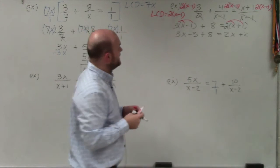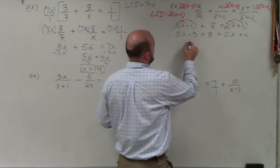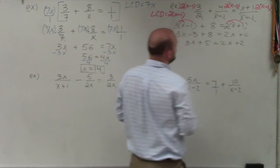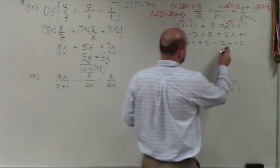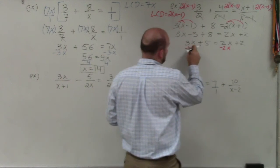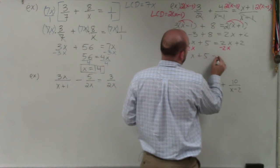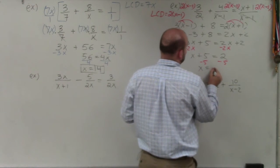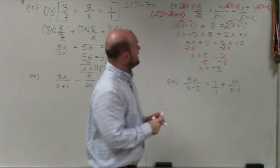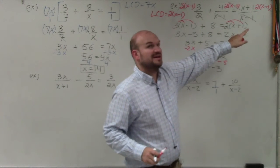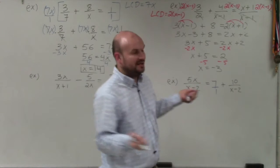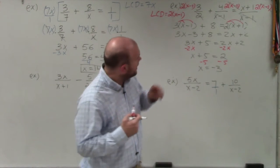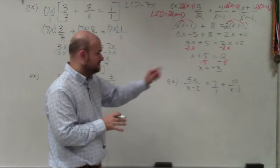I need to simplify and combine like terms: 3x plus 5 equals 2x plus 2. Get the variables to the same side by subtracting 2x on both sides to get x plus 5 equals 2, then subtract 5 to get x equals negative 3. Make sure you plug negative 3 back into your original equation to confirm it doesn't make any denominator equal to 0. It doesn't, so x equals negative 3 is our solution.